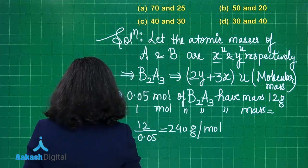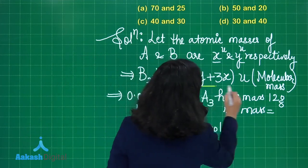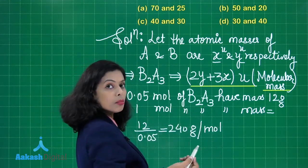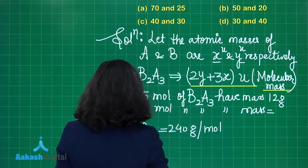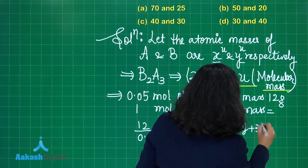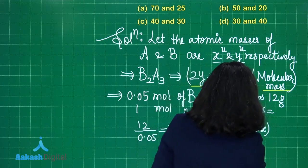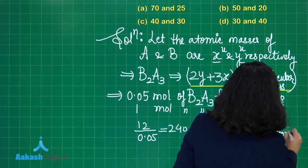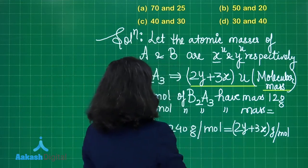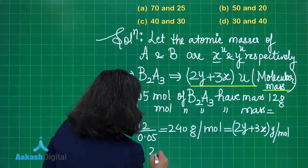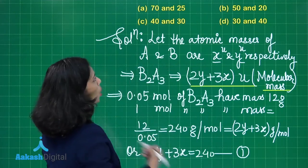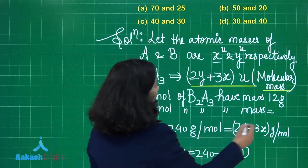Since the assumed molecular mass of B₂A₃ was 2y + 3x, converting to molar mass in grams per mole gives us equation 1: 2y + 3x = 240.